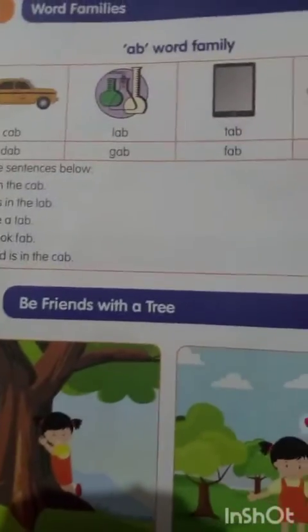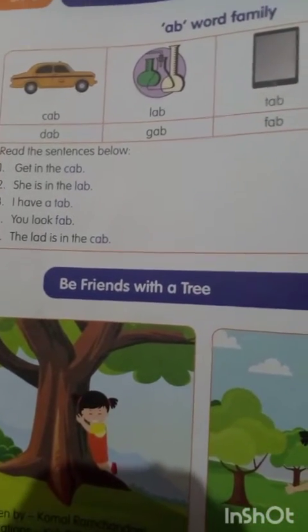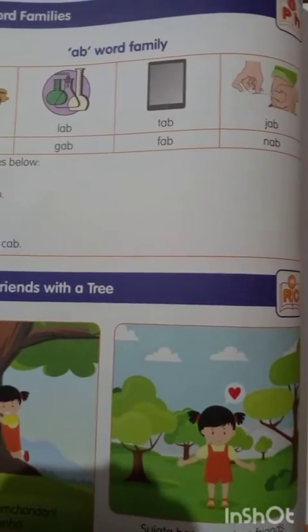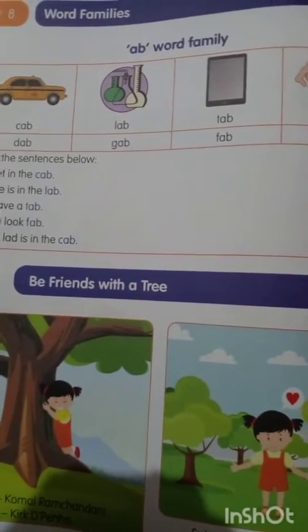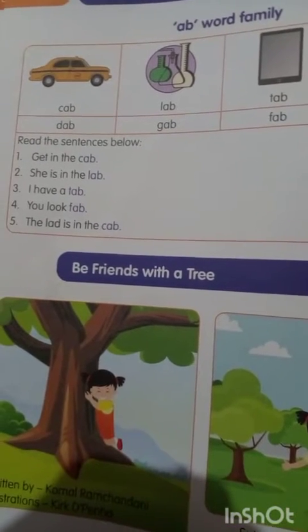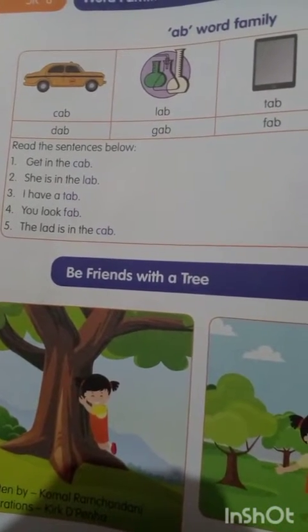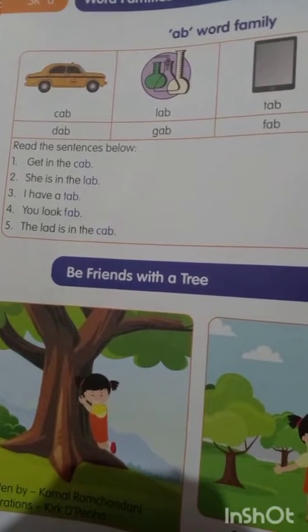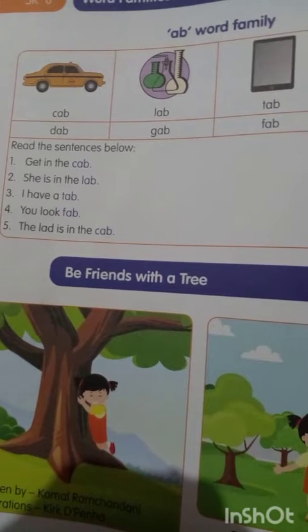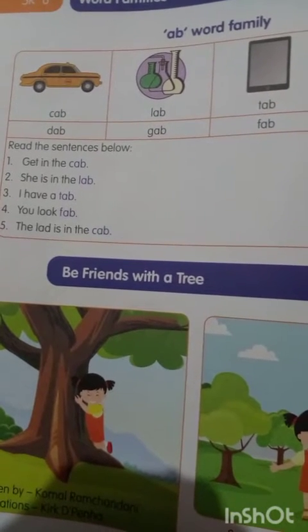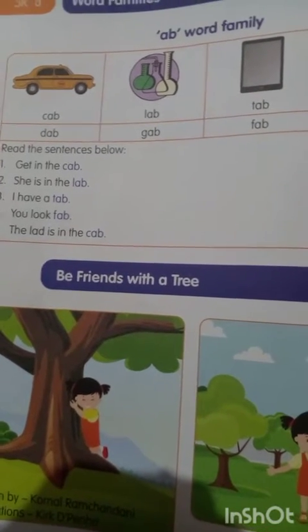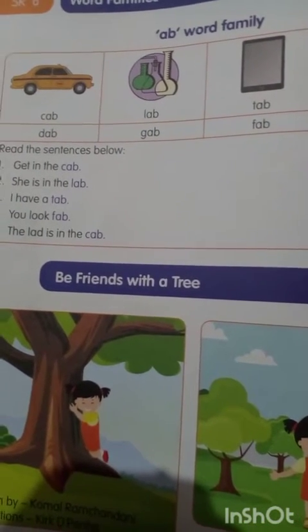Now the AB word family. Words ending with AB: cab, lab, jab, nab, fab, dab. Sentences: Get in the cab — cab means a car. She is in the lab. I have a tab. You look fab. The lad is in the cab.